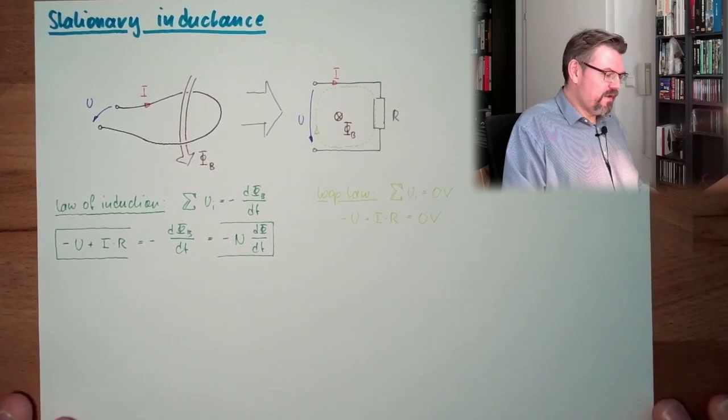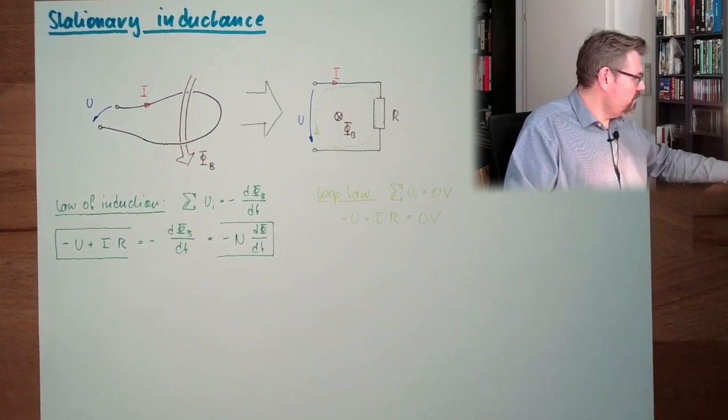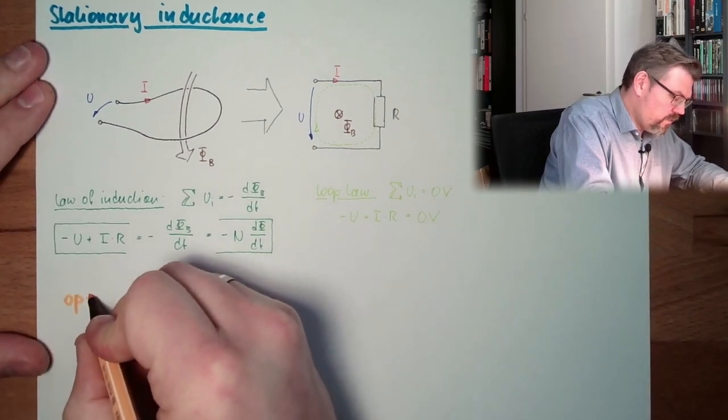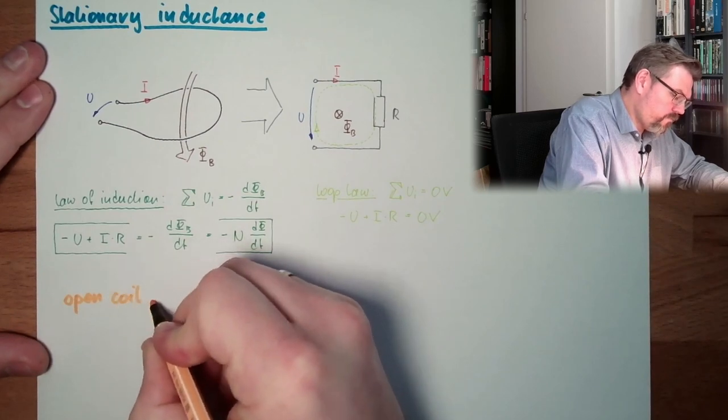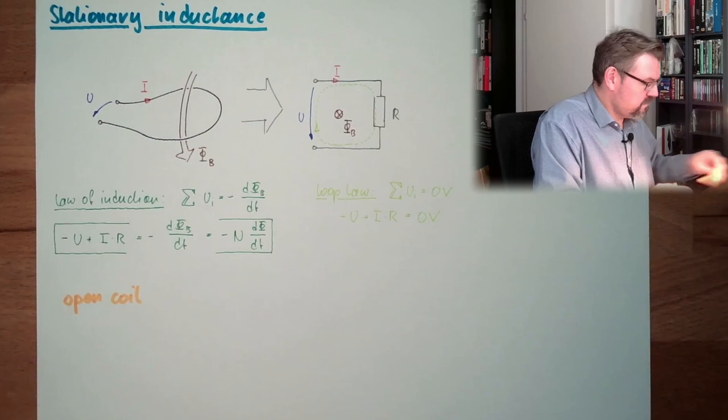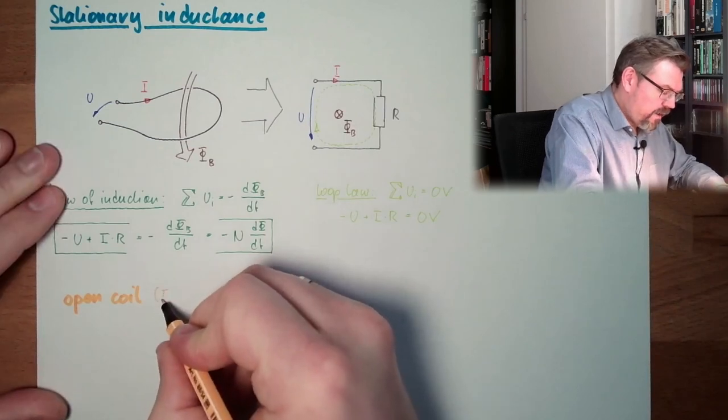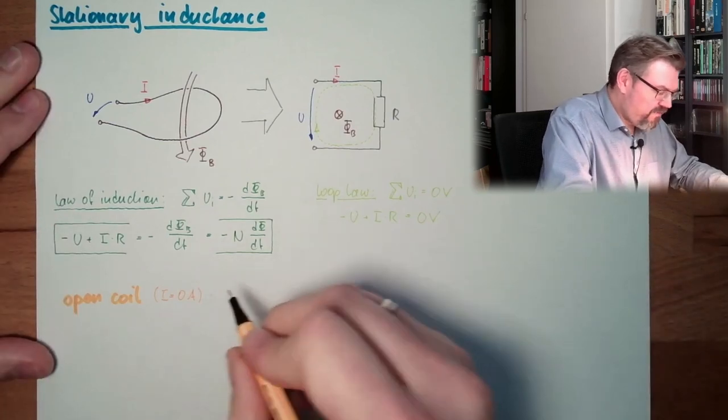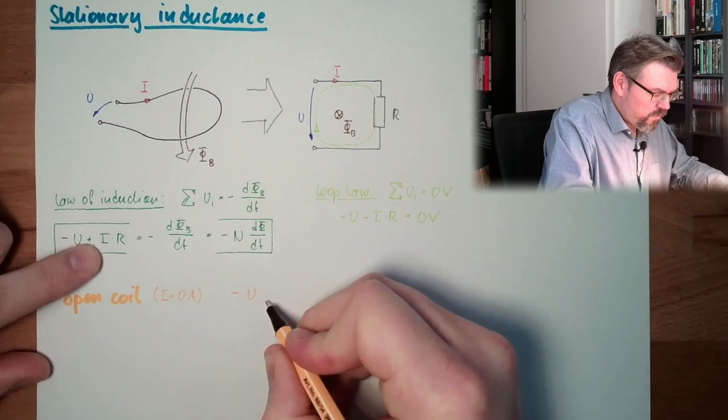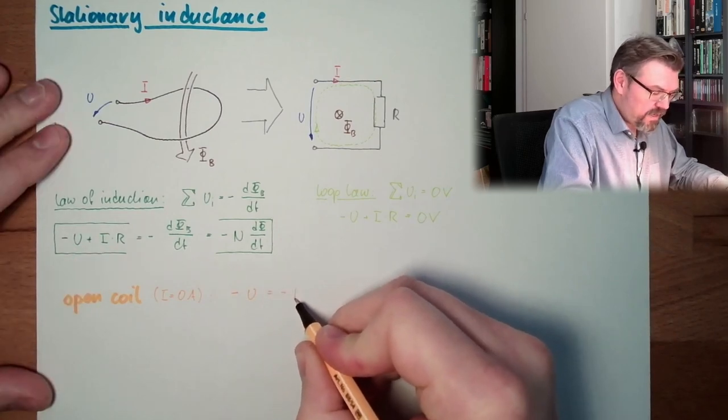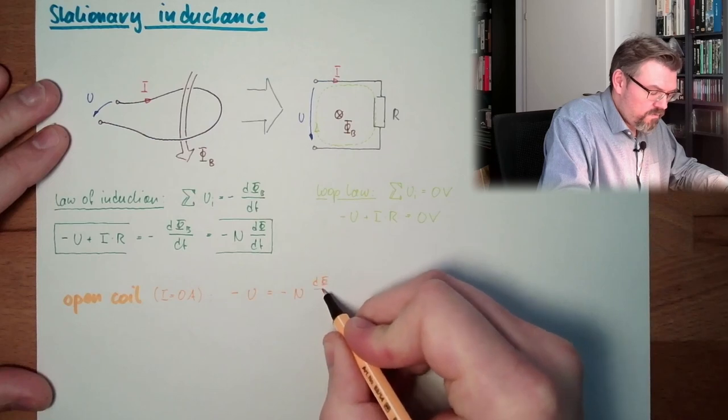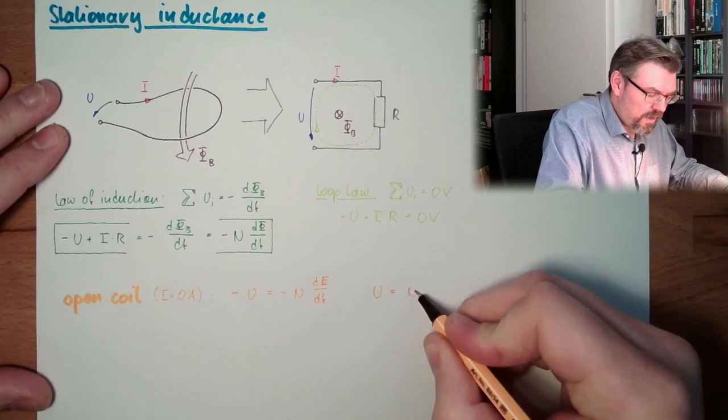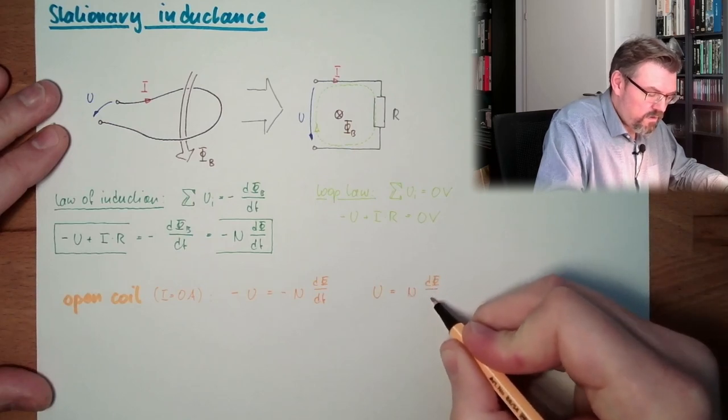So, stationary inductance, let's have a look what is happening if we have an open coil. One case, open coil. What actually means I is zero amps. What does mean I is zero? What is left? Left is minus u, plus zero, minus n dv dt.